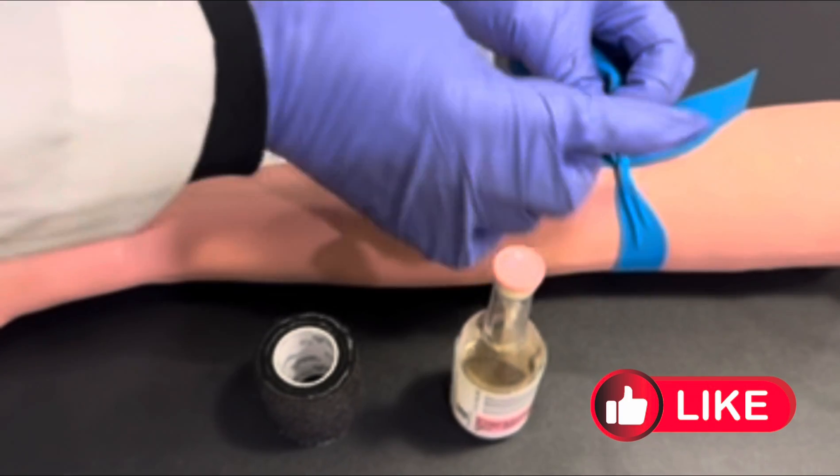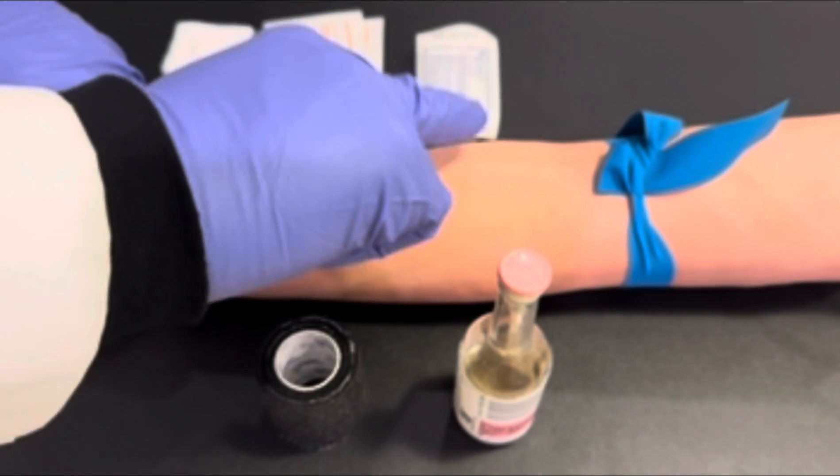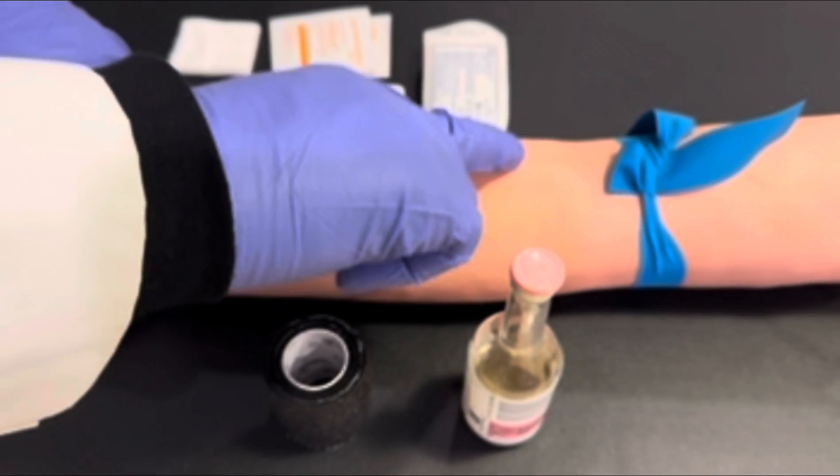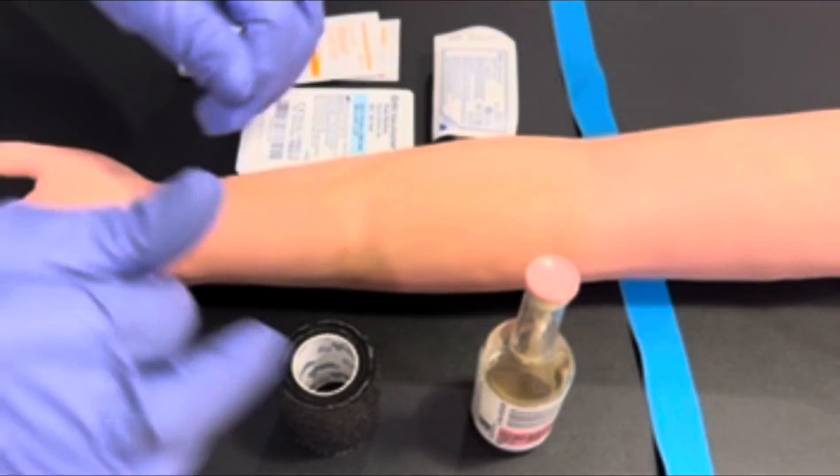First off, we'll start by applying the tourniquet three to four inches above the site of incision. Today we're going to use the antecubital fossa and we will palpate for one of the three primary veins.